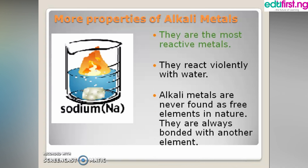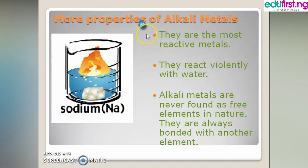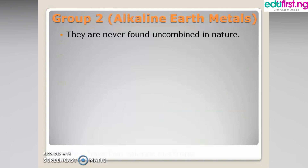They are shiny and easily cut with a knife. An example of an alkali metal is sodium. They are the most reactive metals and react violently with water. As you can see from this diagram, when a sodium metal is placed in water, it causes a vigorous reaction. Alkali metals are not found as free elements in nature.